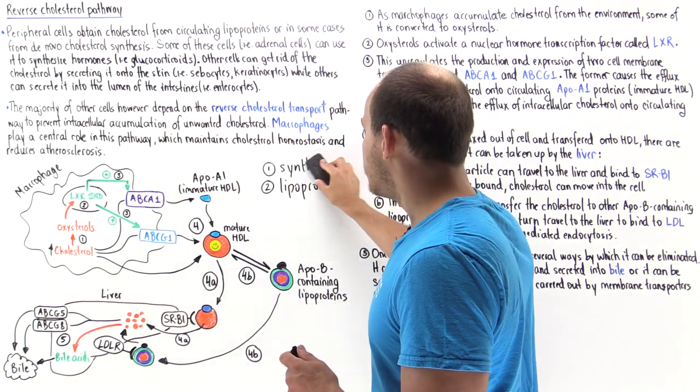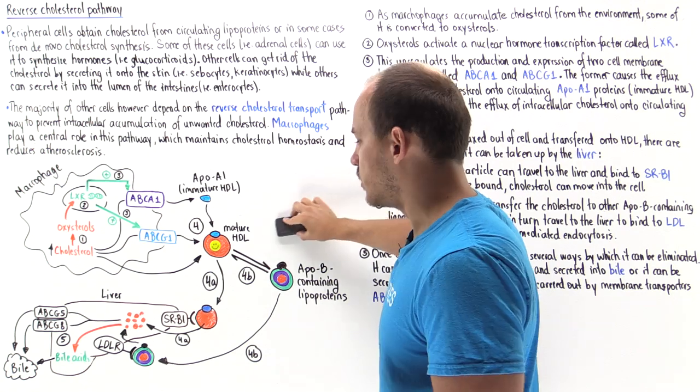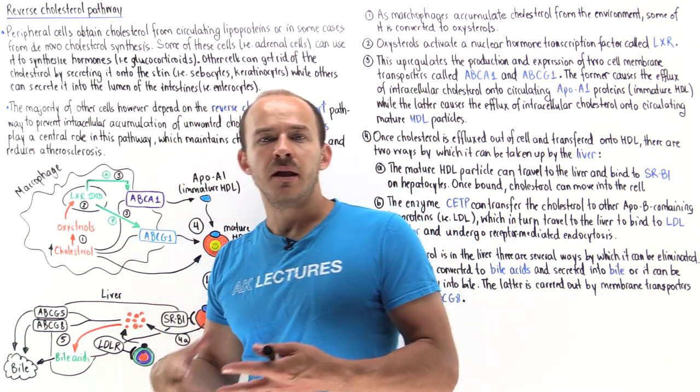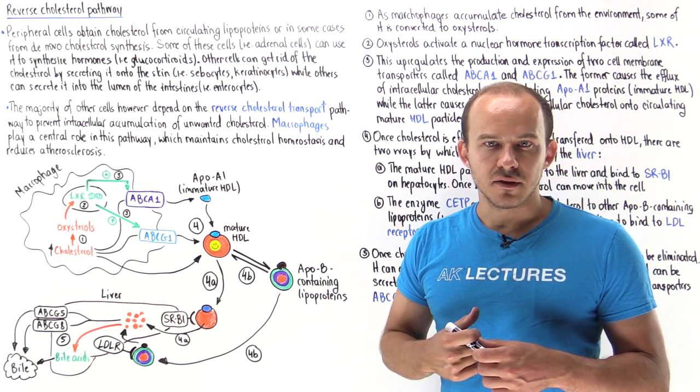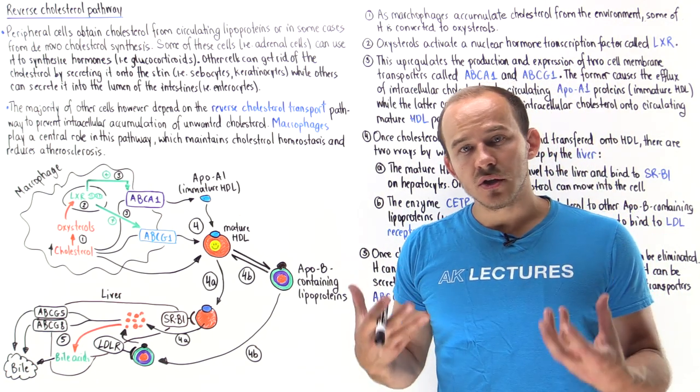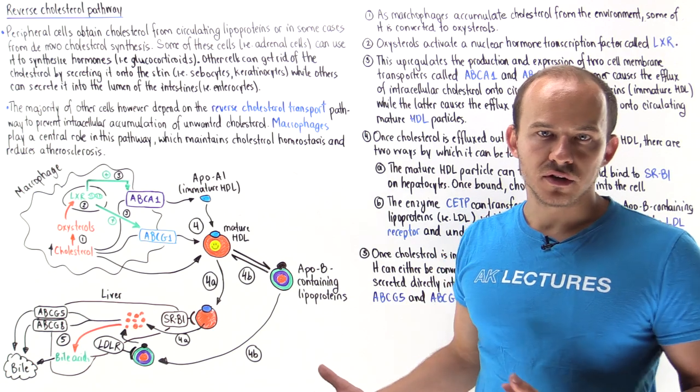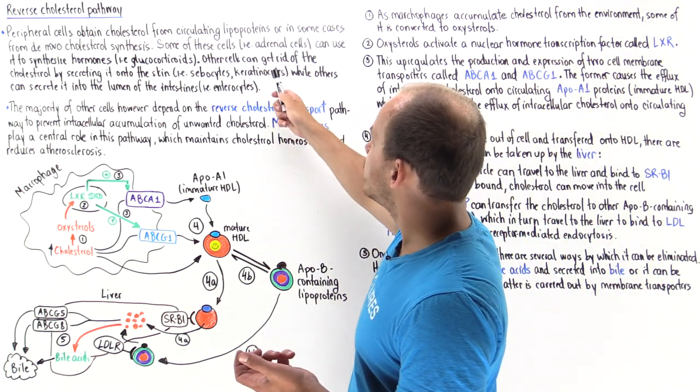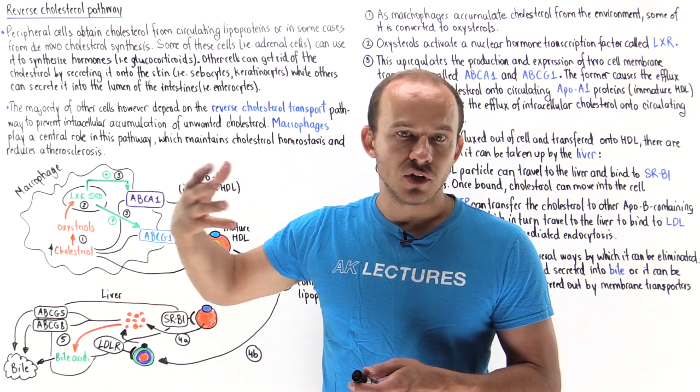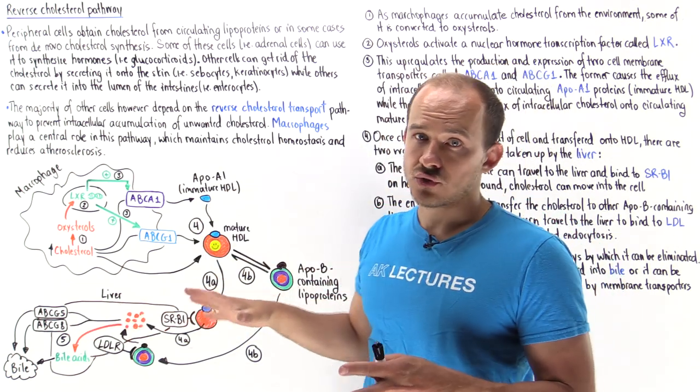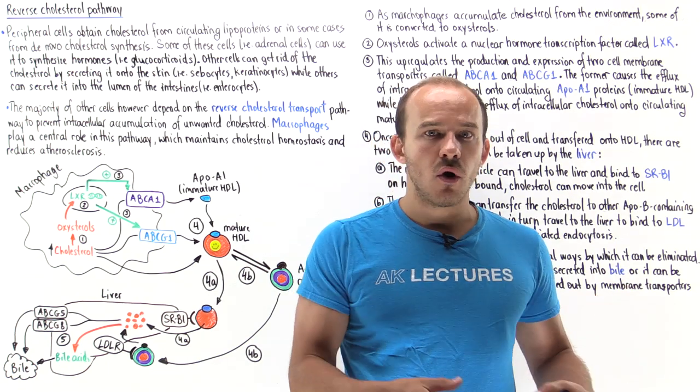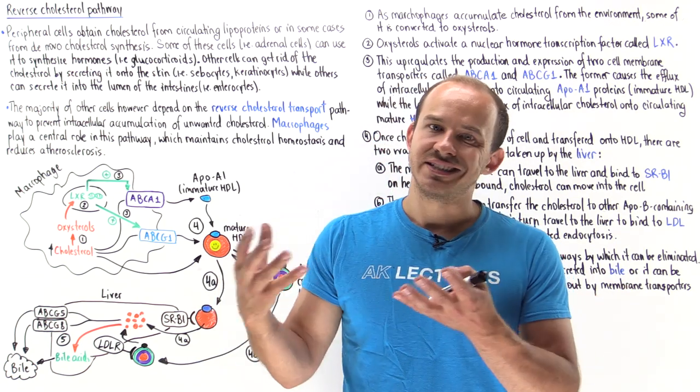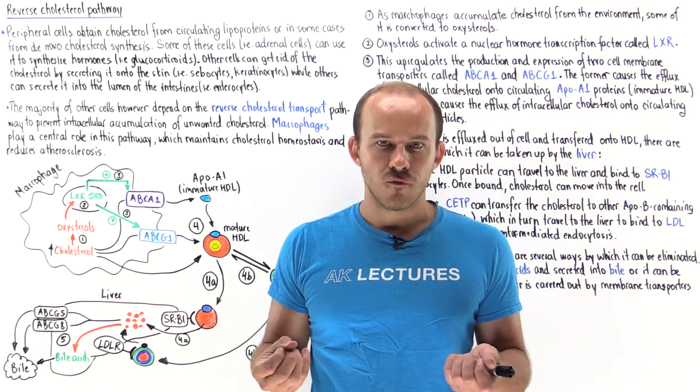Now cholesterol can be used for certain things. Cholesterol, for example, can be used to help build cell membranes. Some specialized cells of the body can use cholesterol to actually synthesize other important molecules. For example, the adrenal cells of the adrenal glands and the cells of the gonads can actually use cholesterol to form hormones—we can form things like glucocorticoids or cortisol, testosterone, estrogen, and so forth.